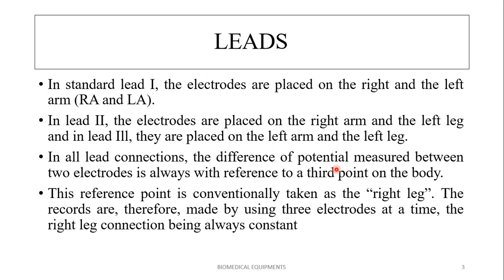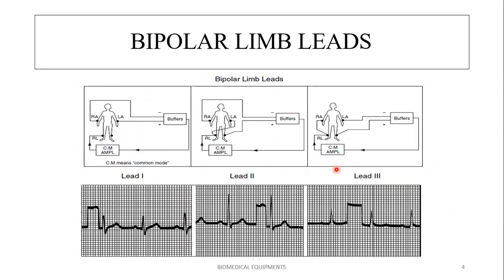The records are made using three electrodes, with the right leg connection always being constant while the other two electrodes differ. The most conventional method used in most ECG machines is the bipolar limb lead system. This is how the leads are connected, as shown in the figure.